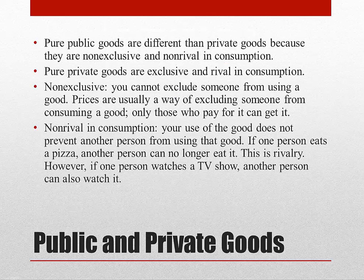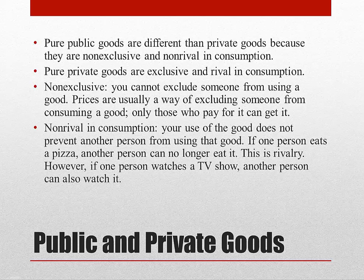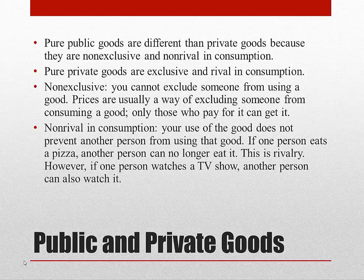There are two different types of goods: public and private. Public goods are non-exclusive and non-rival consumption, whereas private goods are exclusive and rival consumption. Non-exclusive means that it's impossible to prevent someone from benefiting from the good, even if they're just a free loader and didn't pay for it. Non-rival consumption means that one person's use of the good doesn't deny another person the use of the good. For example, TV shows are non-rival because if one person watches it, another person can also watch it. However, pizzas are rival consumption because if I buy and eat a pizza, you can no longer buy that same pizza.